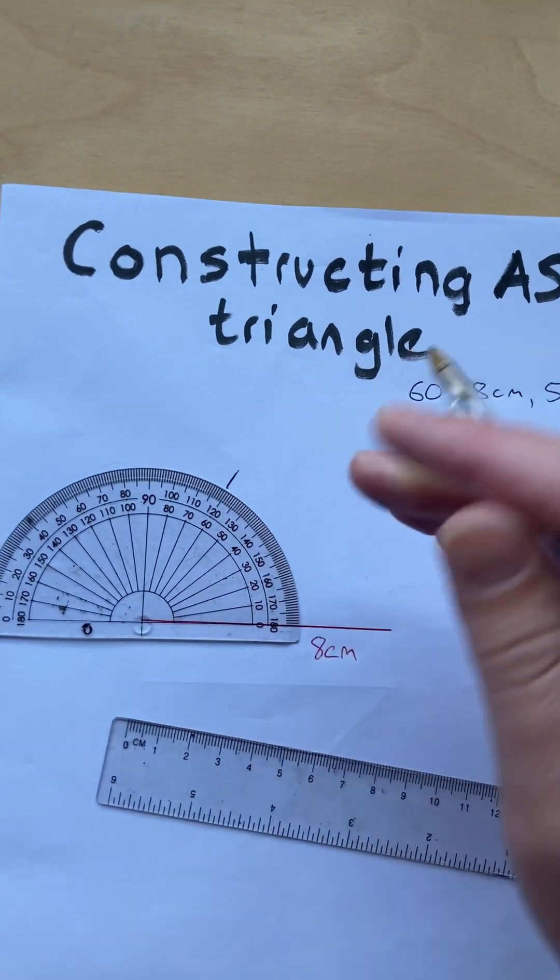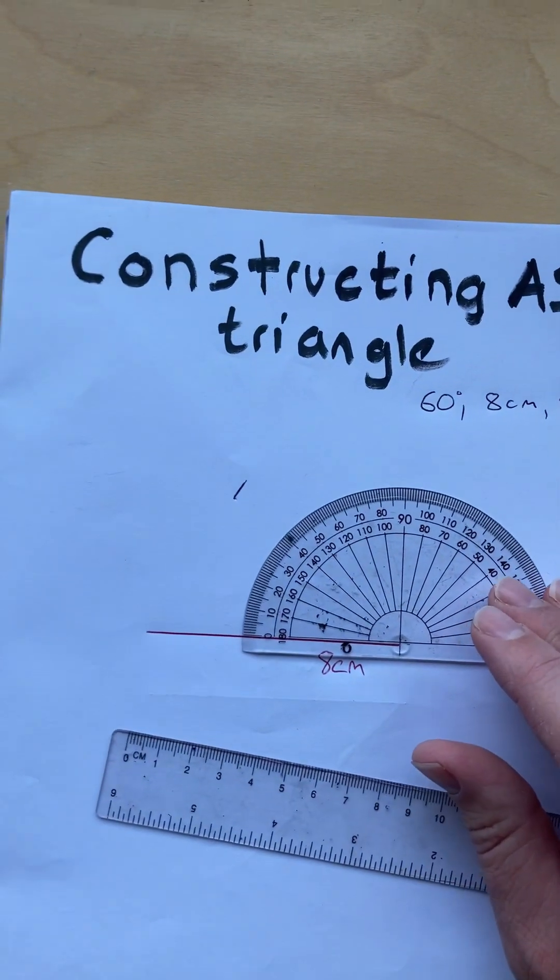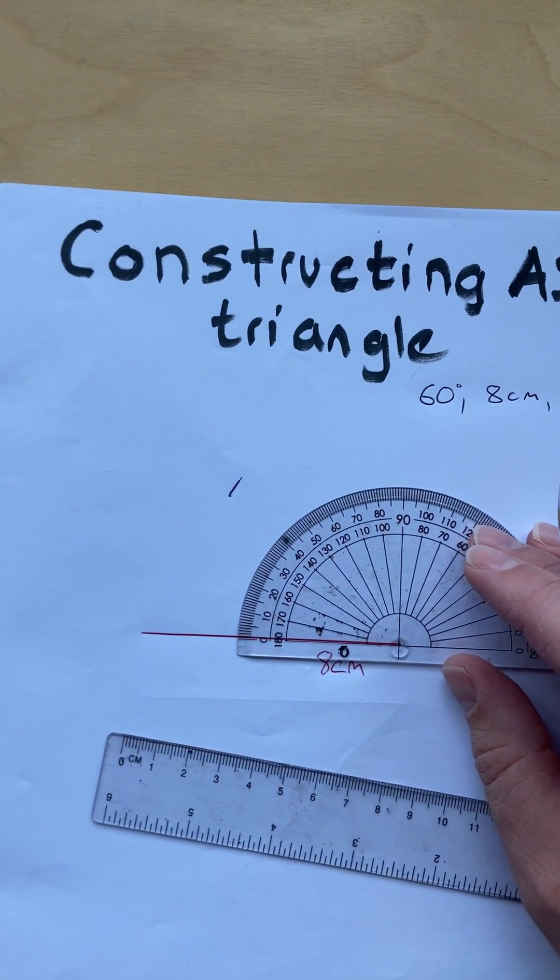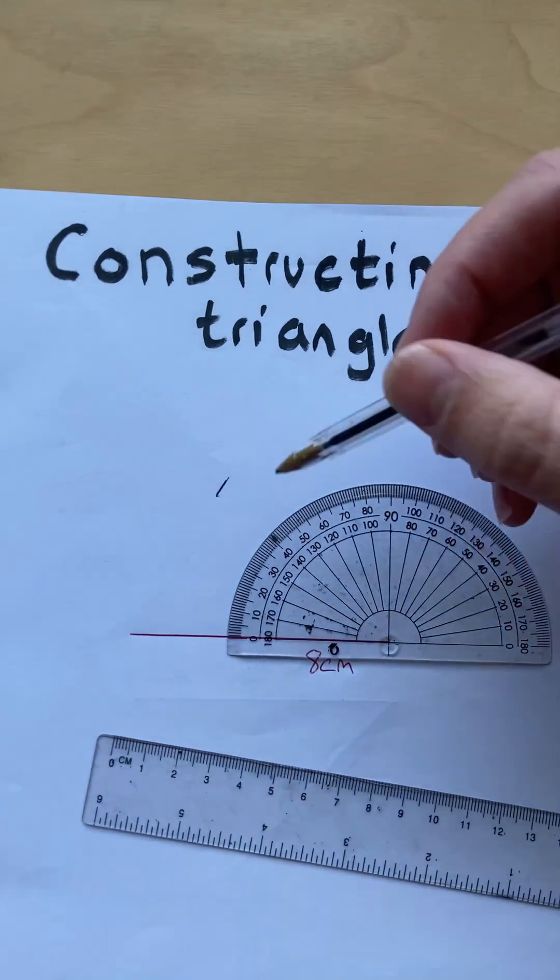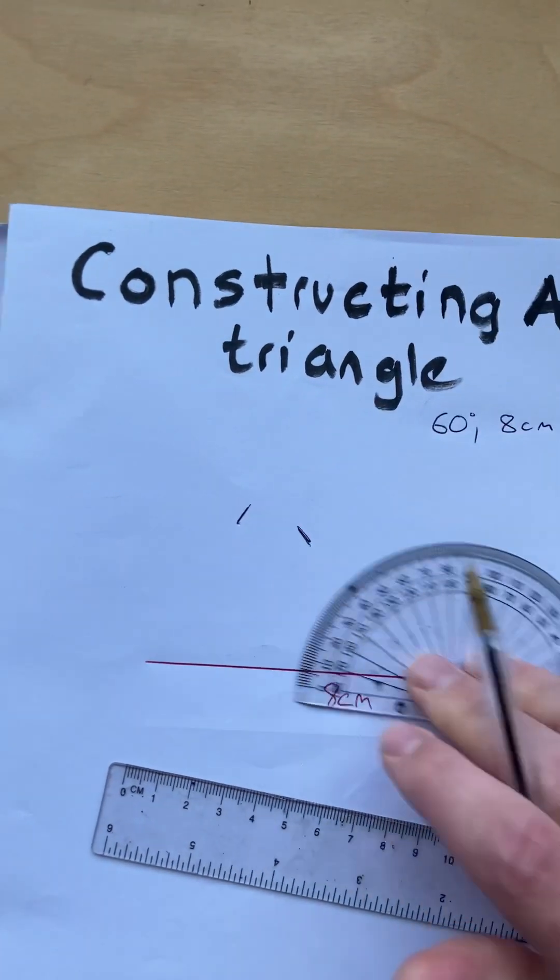We don't know how long that line's going to be. And move it to the right side. Now you're going to read from the other side. Again, always read from zero. Read to 50 degrees. We don't know how long that line there's going to be.